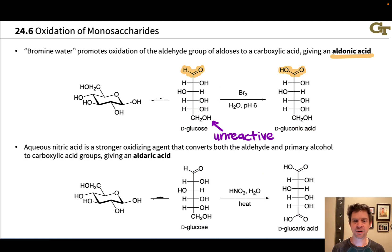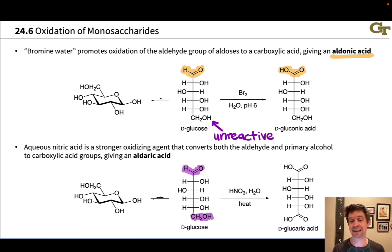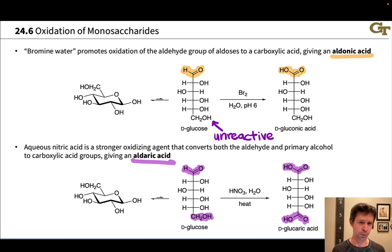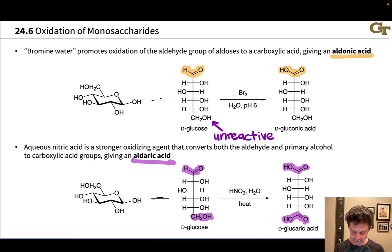Somewhat stronger oxidizing conditions lead to the production of a dicarboxylic acid, known as an aldoric acid. The reagent here is generally dilute nitric acid and heat. At elevated temperature with nitric acid, we get oxidation both of the aldehyde and the primary alcohol CH2OH group to two carboxylic acids. These conditions are still mild enough that the secondary hydroxyl groups remain mostly unaffected, so the major product is just the diacid with no oxidation of the internal secondary alcohols in the sugar backbone.